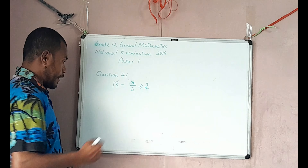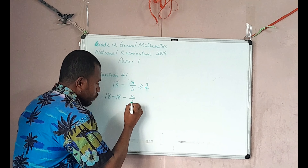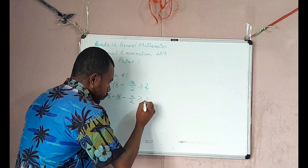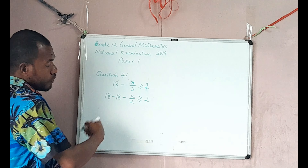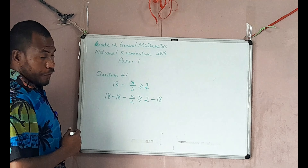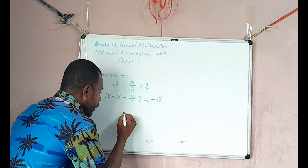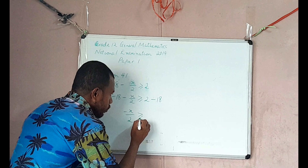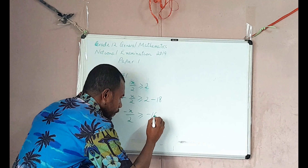18 minus 18 minus x on 2 is greater than or equal to 2. Because of this inequality sign, you also subtract 18 on the right hand side. Simplifying: 18 take away 18 is 0, so the left hand side becomes negative x on 2, which is greater than or equal to 2 take away 18, which is negative 16.